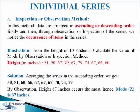First we will discuss the inspection or observation method. In this method, data are arranged in ascending or descending order firstly. Then through observation or inspection of the series, we notice the occurrence of items in the series. The value that occurs most frequently in the series is known as mode. Let us understand this with the help of the following illustration.